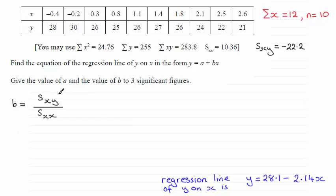b is found by doing sxy all divided by sxx. And to get a, a is just a rearrangement of this equation.